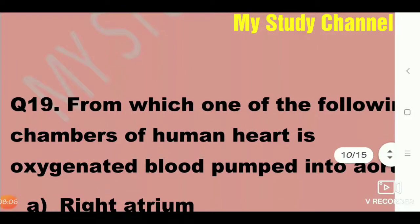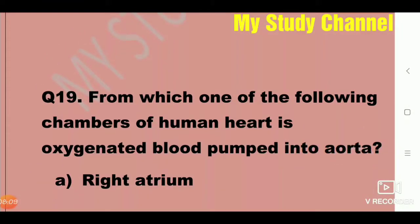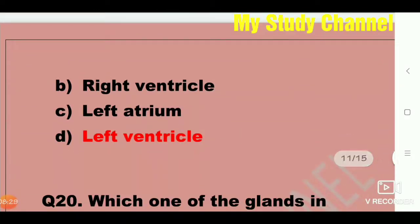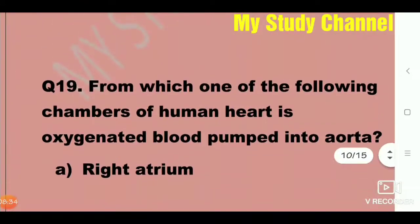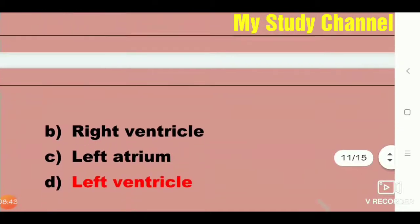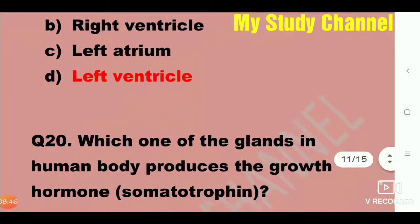Next question: From which of the following chambers of the human heart is oxygenated blood pumped into the aorta? The answer is left ventricle. Left ventricle is the right answer — oxygenated blood is pumped from the left ventricle into the aorta.